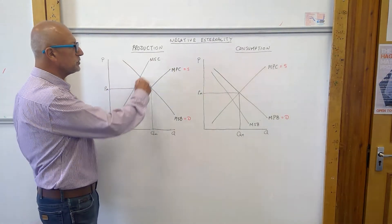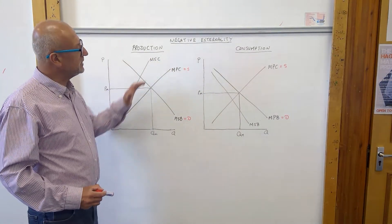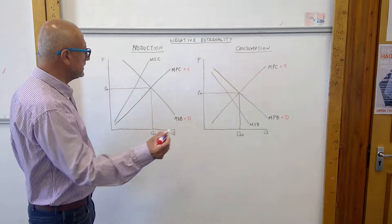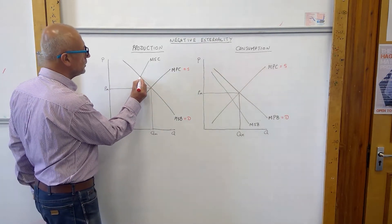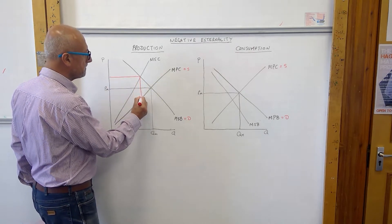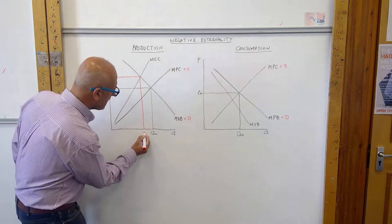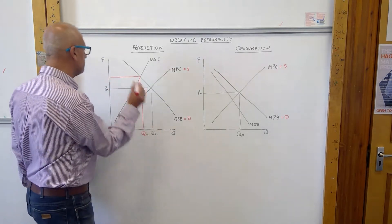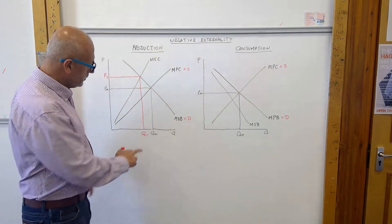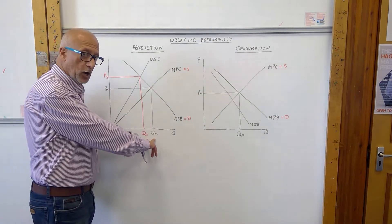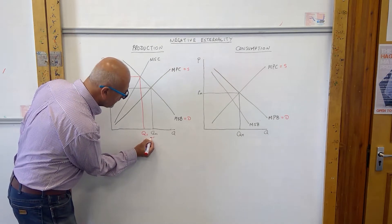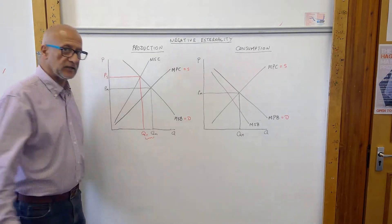Therefore the marginal social cost is greater than the marginal private cost. The problem with that, of course, is that society wants this to be the equilibrium output. And therefore we have here an overproduction.